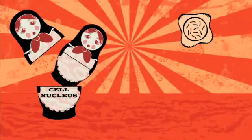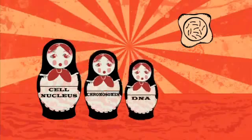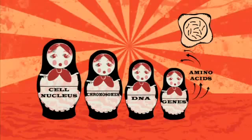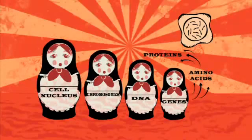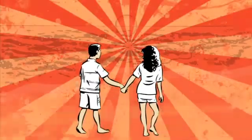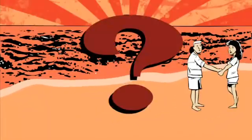Let's just go over that again. Inside each cell nucleus are chromosomes that are made from DNA. DNA contains genes. Each gene has a code to make a protein. The protein is made out of amino acids that are joined together in the order determined by the code. The proteins go on to make living things that go on to live happily ever after. Oh. No, wait.